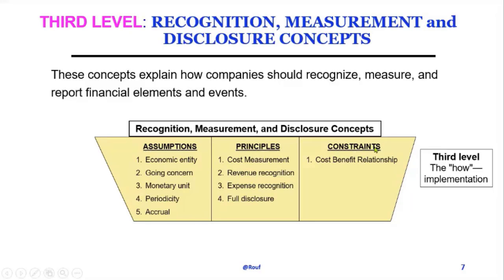And constraints include: cost-benefit relationship, materiality, industry practice, and conservatism convention. These are the principles and constraints of any business organization applied in accounting practice and accounting information reporting. This completes the third level of the conceptual framework.